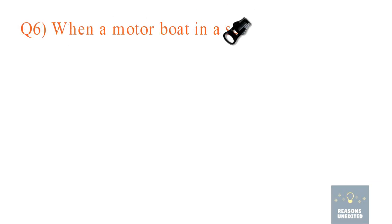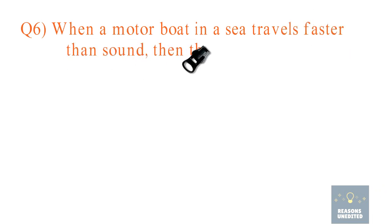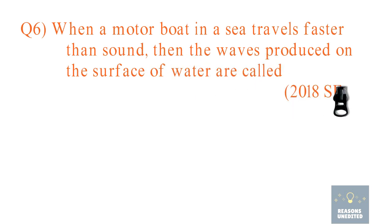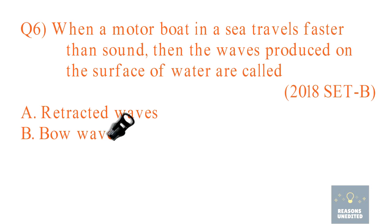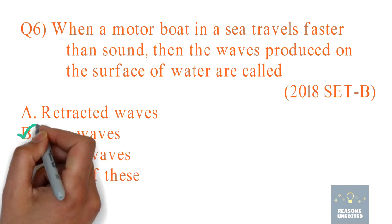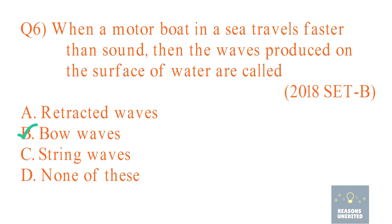Question 6. When a motor boat in a sea travels faster than sound, the waves produced on the surface of water are called: Option A: refracted waves. Option B: bow waves. Option C: string waves. Option D: none of these. The correct option is Option B, bow waves.